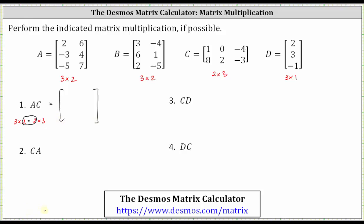For number two, we have matrix C times matrix A. Matrix C is a two by three matrix and matrix A is a three by two matrix. Three equals three is true, and therefore the product does exist, and the product is a two by two matrix.